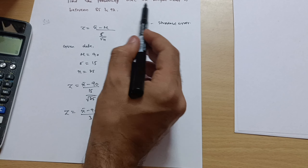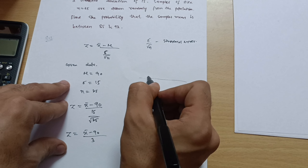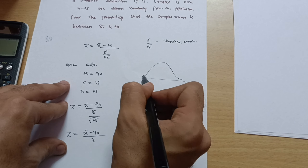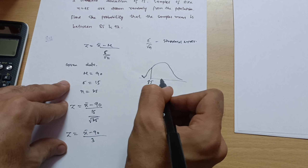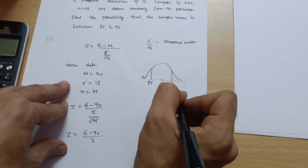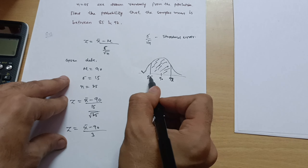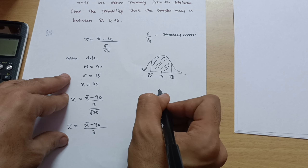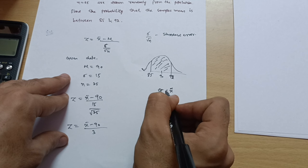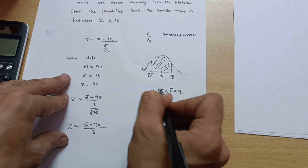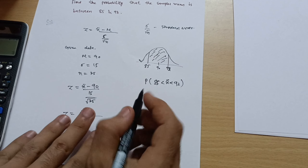We need to calculate the probability that the sample mean is between 85 and 92. On the normal distribution curve, 85 is to the left of the mean 90, and 92 is to the right. The shaded area represents the probability, written as P(85 < x̄ < 92).